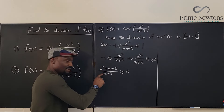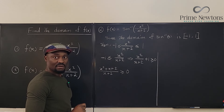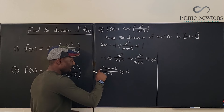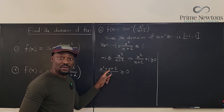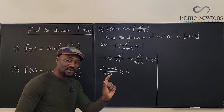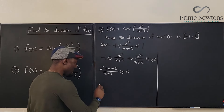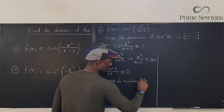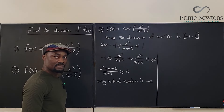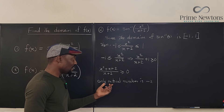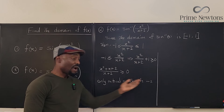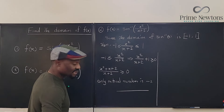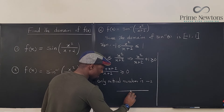The denominator is 0 when x is negative 2. The numerator x squared plus x plus 2 can never be 0 because b squared is less than 4ac — there is no real value of x for which the top is going to be 0. So the only critical number is negative 2. So we just need to test regions around negative 2 using a sign chart. We have negative 2 as the only critical number.